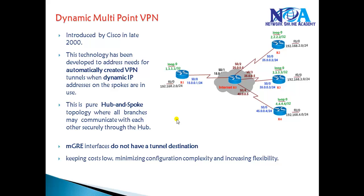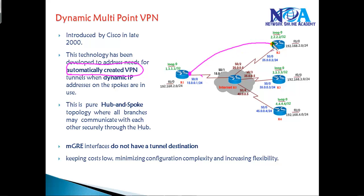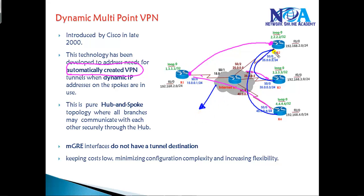DMVPN was introduced by Cisco in the late 2000s. This technology allows you to have dynamically and automatically created VPNs. Once we configure the DMVPN commands, it's going to build a logical tunnel automatically. It also allows you to have dynamic tunnels built between all the spokes, which means with minimal configuration we can have a full-mesh Dynamic Multipoint VPN implemented between Router 1, Router 2, and all remaining routers.